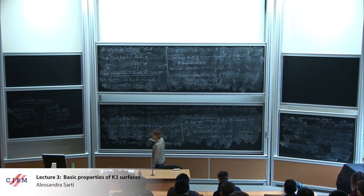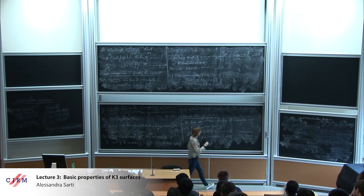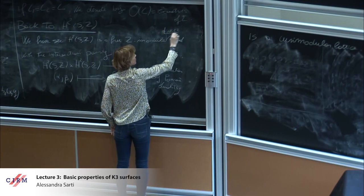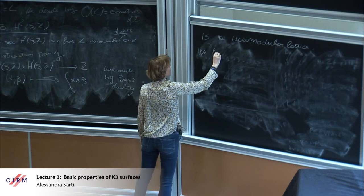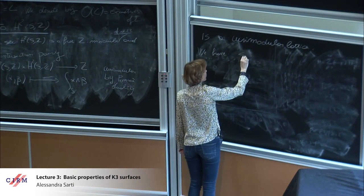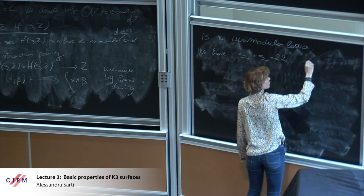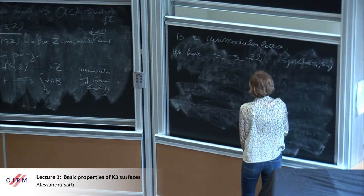So we want to understand how to see that H2(S,Z) is isometric to the direct sum. We have to look at the signature. First of all, we note that it is of rank 22, and it is a unimodular lattice.